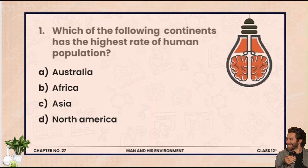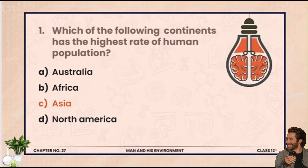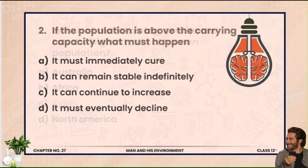The first question is: which one of the following continents has the highest rate of human population? The options are Australia, Africa, Asia, and North America. The answer is Asia.